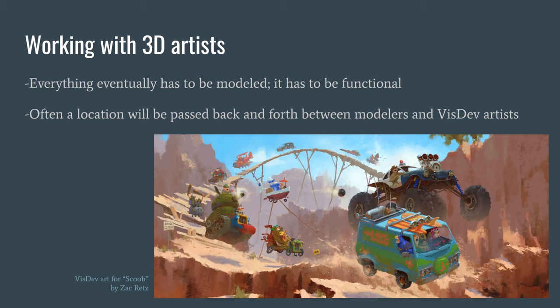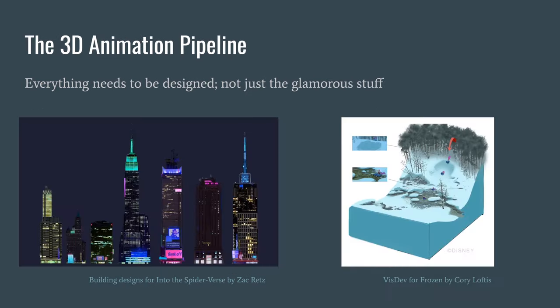Working with 3D artists is an important skill on a 3D animated project. Everything needs to be modeled and functional — a location is often passed back and forth between modelers and visdev artists. You might design a location, they do a rough modeling pass in 3D, pass it back for a rough color and lighting pass. Everything needs to be designed — including individual building facades, as shown in these Spider-Verse building designs by Zach Retz — though some things are auto-generated using technology, everything still comes from a base of being designed.